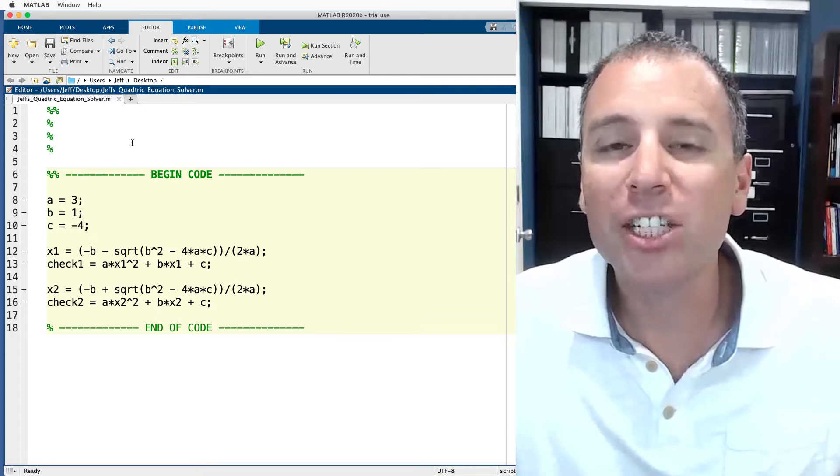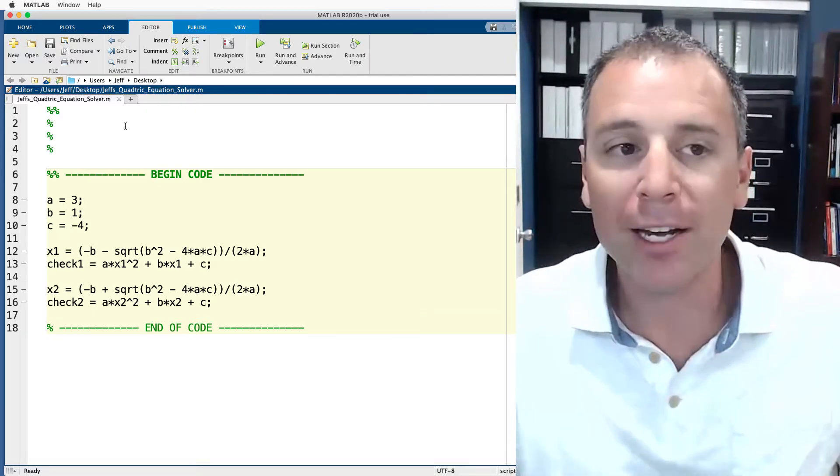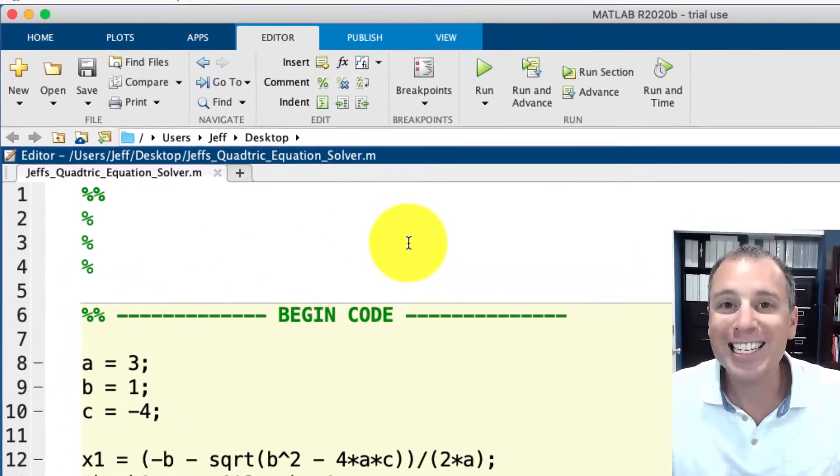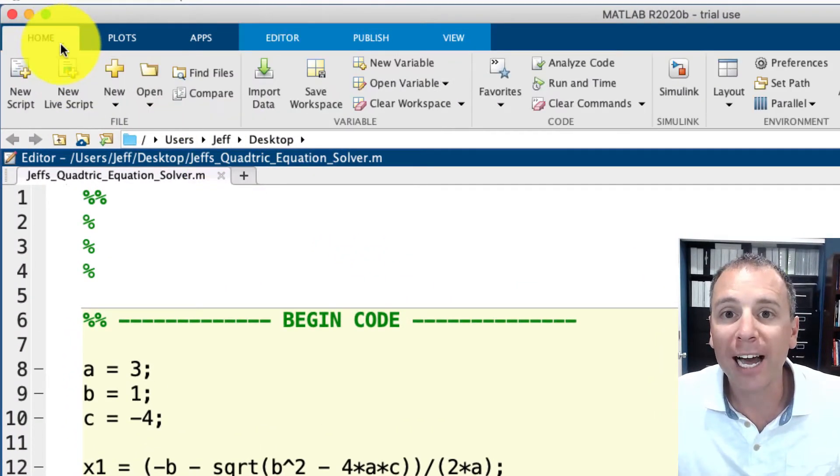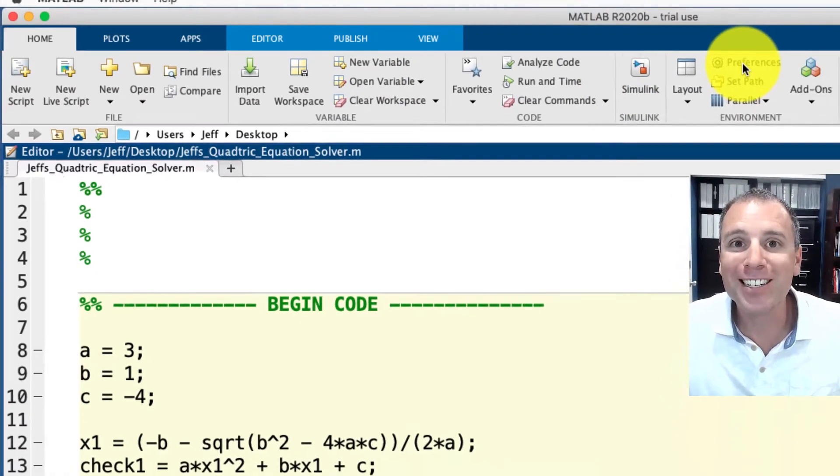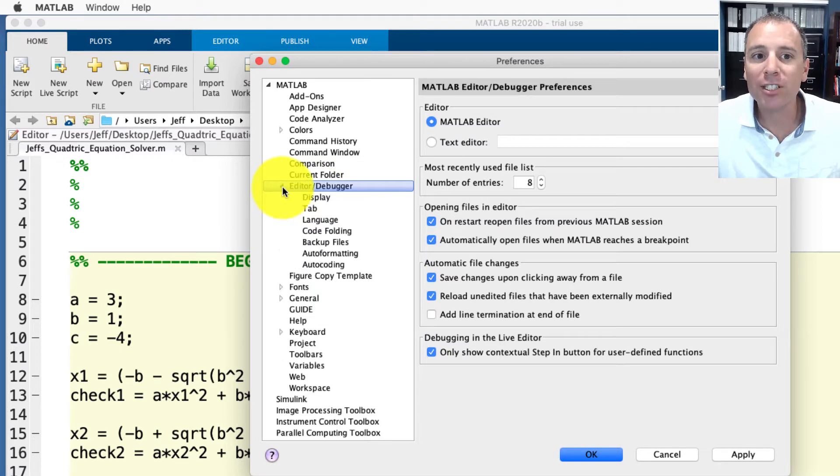The next thing I want to highlight is actually known as code folding. This is for me as I write my code to make it a little bit more easy to work with big chunks. So if I go to the home tab and then click on preferences that brings up my preferences window. Let's go down to the editor and debugger and just kind of highlight down. Do you see the code folding section of this editor and debugger preferences?